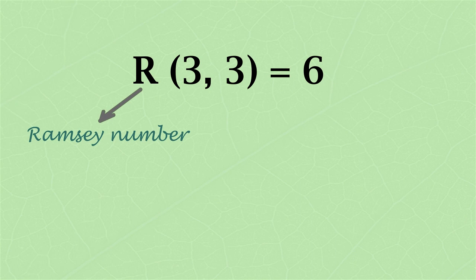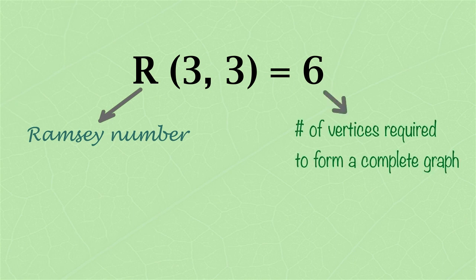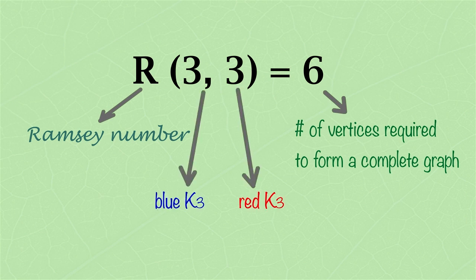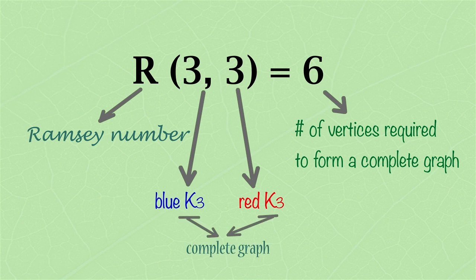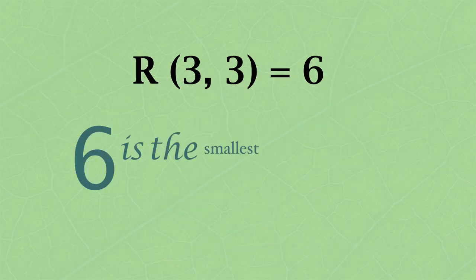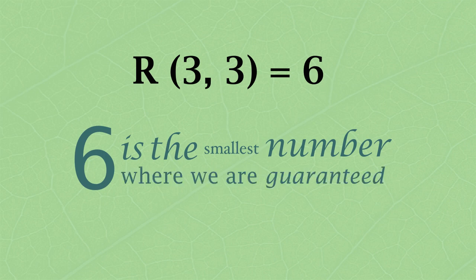The mathematic fact is R(3, 3) equal to six. R is a Ramsey number. Six is the number of vertices required to form a complete graph. 33 represents blue k3 and red k3. K is a complete graph with all vertices connected. 6 is the smallest number where we are guaranteed to find a red k3 or a blue k3.